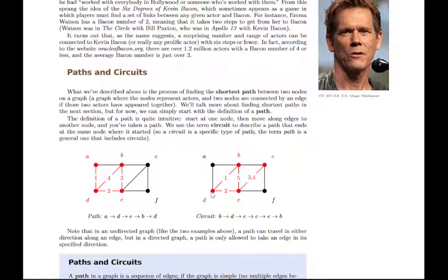If you started at D and went, or started B rather, went down to D and then over to E, up to C, and back, and up to B, that would be another path. And since that one came back to where it started, we would call that a circuit.